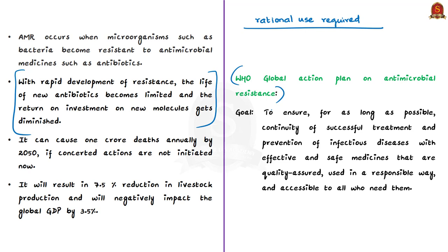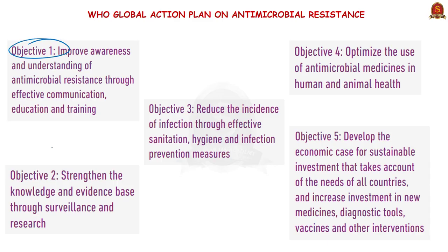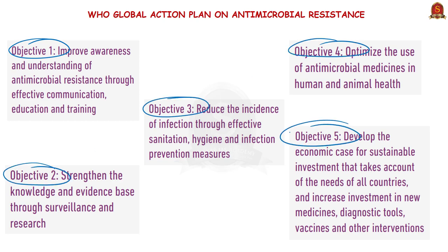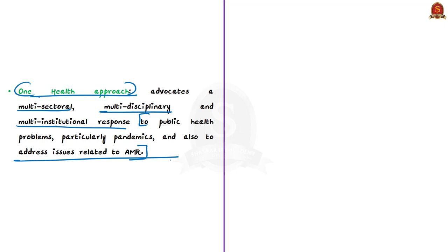To achieve this goal, five important strategic objectives are set out by this action plan. One of the reasons for antimicrobial resistance is the indiscriminate usage of drugs; rational use of antibiotics in humans, animals and agriculture is required, warranting coordinated action in all sectors. This is where the authors bring in the One Health approach, which advocates a multi-sectoral, multi-disciplinary and multi-institutional response to public health problems, particularly pandemics, and to issues related to antimicrobial resistance.